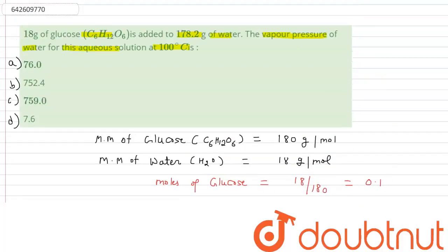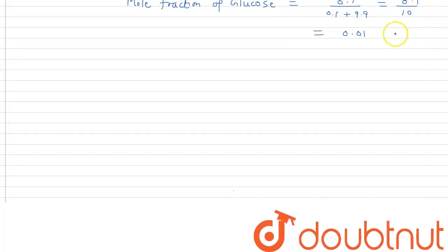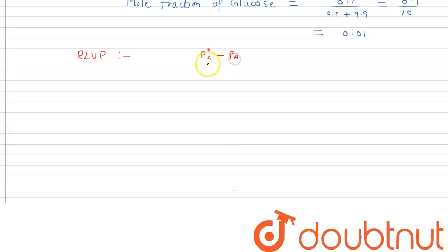So what we have to calculate is the vapor pressure of water for this aqueous solution. For this we know that the relative lowering of vapor pressure is a colligative property, and the formula is: (P0A − PA) / P0A = mole fraction of solute, where P0A is the vapor pressure of the pure component and PA is the vapor pressure of the solution.